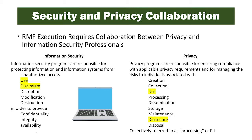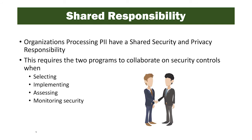Privacy programs, on the other hand, are responsible for ensuring compliance with applicable privacy requirements, and for managing the risks to individuals associated with creation, collection, use, processing, dissemination, storage, maintenance, disclosure, and disposal of PII — collectively referred to as processing of PII. As we can see, highlighted in yellow are a number of things that are exactly the same on both sides, showing that this is a shared responsibility. This requires the two programs to collaborate on security controls when selecting, implementing, assessing, and monitoring the controls that protect both information security and privacy.